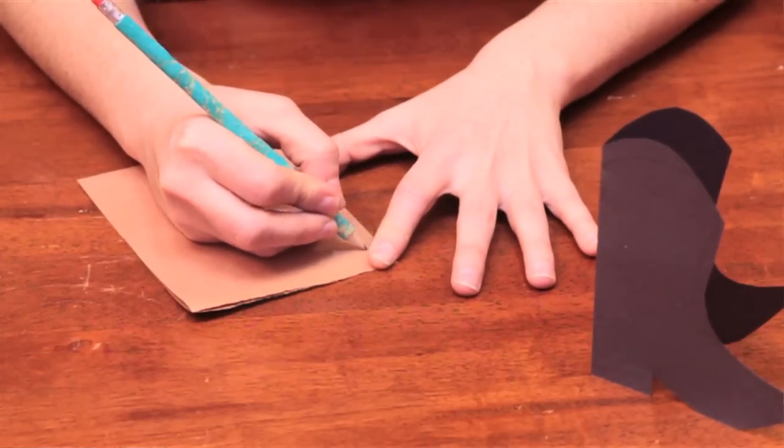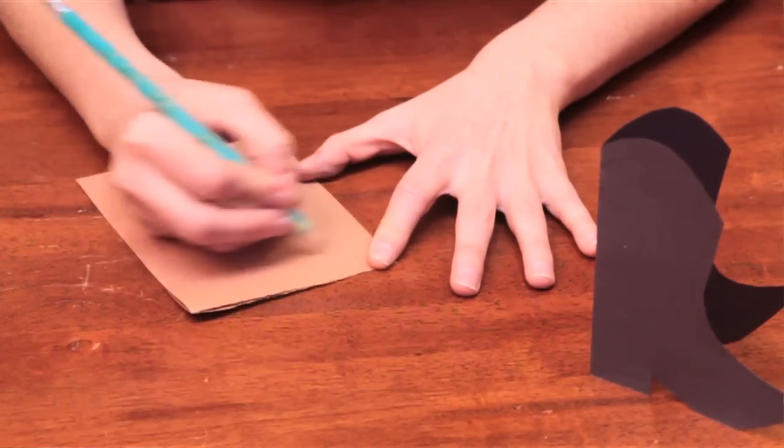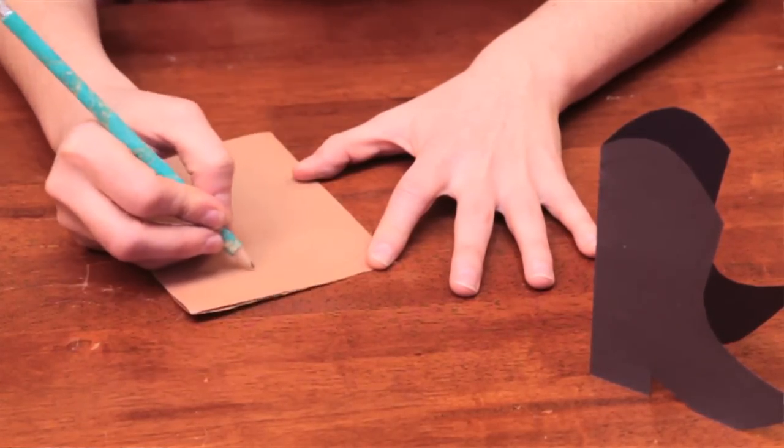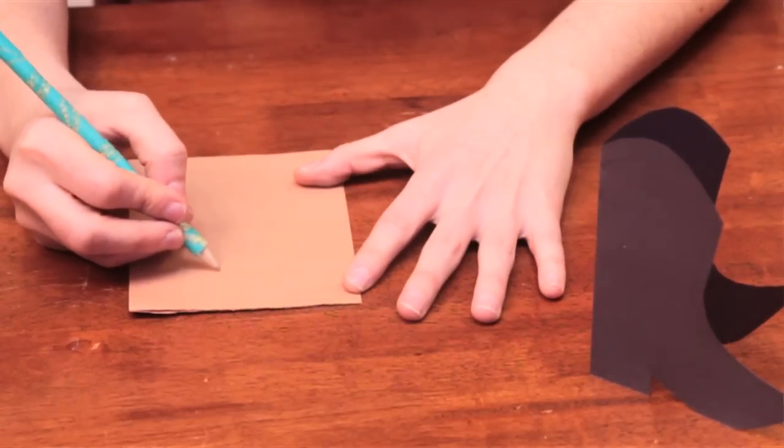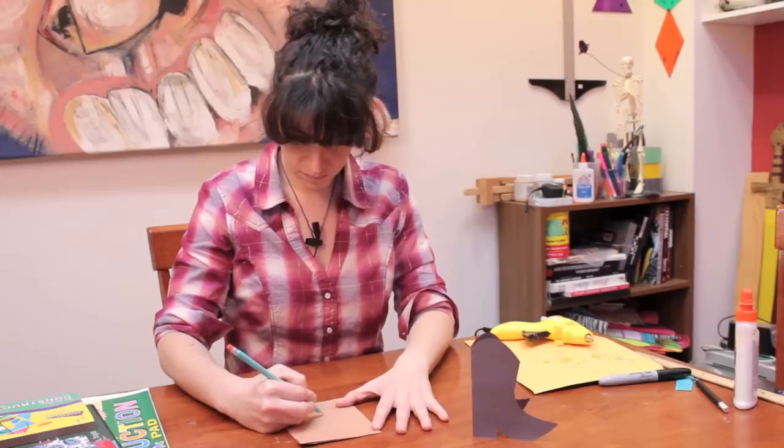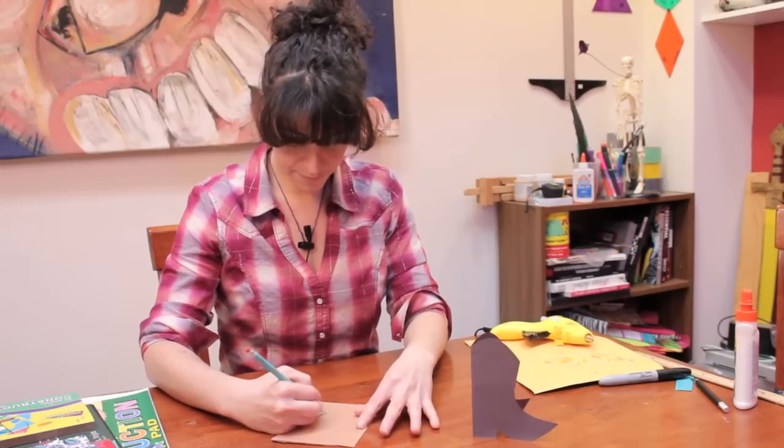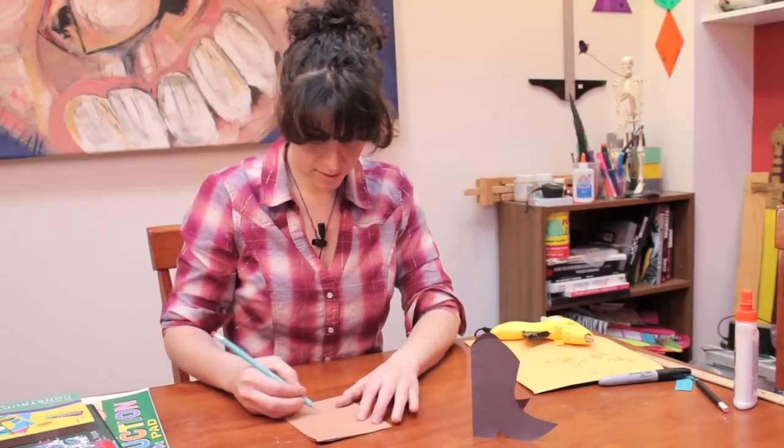What we're going to do is draw a cowboy boot on. So you want that rounded top of the cowboy boot, and then it swoops down a bit and then swoops back up for the toe.